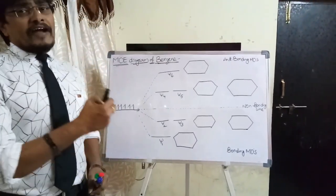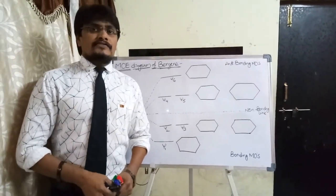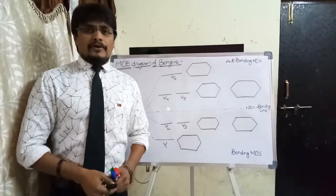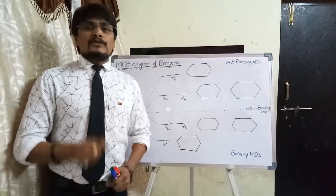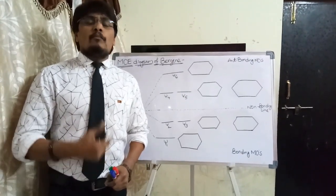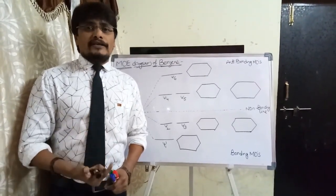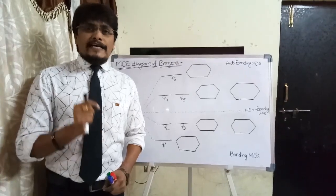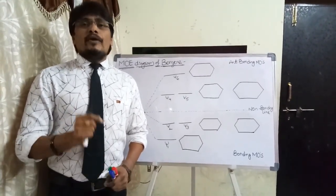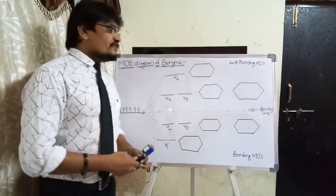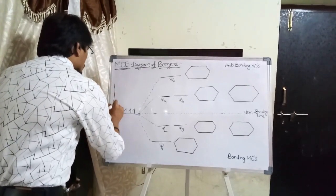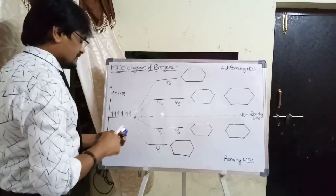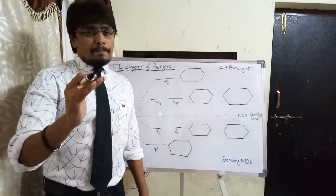Let us recapitulate the basics. The basic relation I gave you is the relation between node and energy. That is the one which is the driving force in order to draw the molecular orbital energy diagram of any molecule — node is directly proportional to energy. The node decides the energy level of the molecular orbital. As we move up, energy will increase.